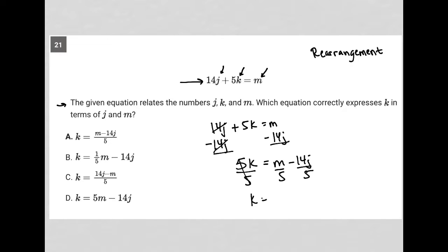So I have k equals, and looking at my answer choices, this is the exact same as just saying m minus 14j all over 5.